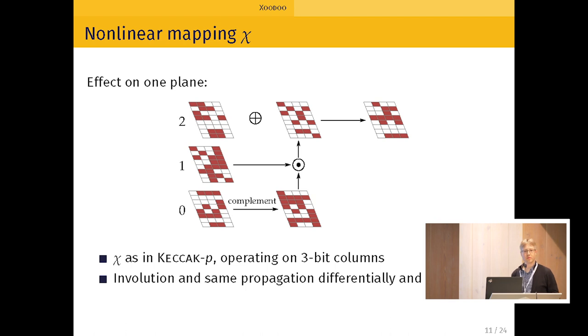So first chi. So chi is really a 3-bit S-box, just like the S-box of Keccak, except that it's on 3 bits instead of 5. So to compute one output bit, you take two other bits from the input, one of them is complemented, then you take the product of these two bits, and then you XOR the result to the third bit. And you do that for the three bits. It's a degree 2 function, but it's also an involution. And it has nice properties in terms of propagation of linear masks and differences. And it made the analysis much easier in terms of trails.